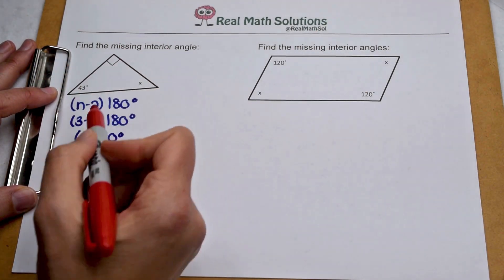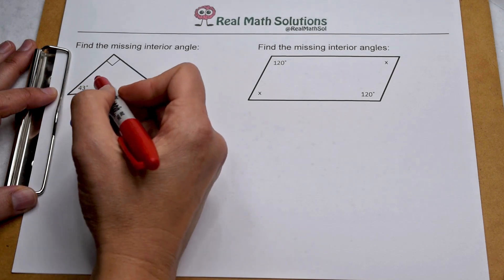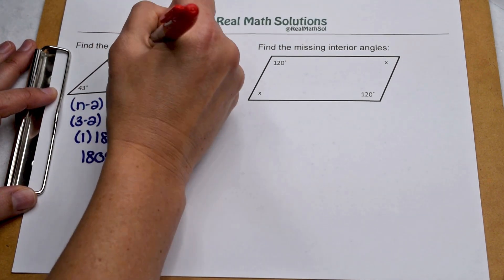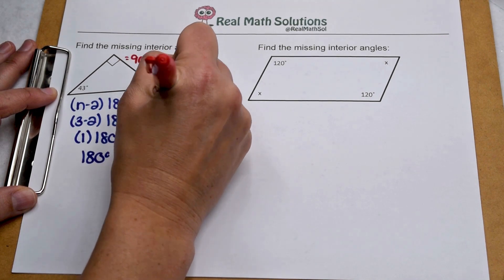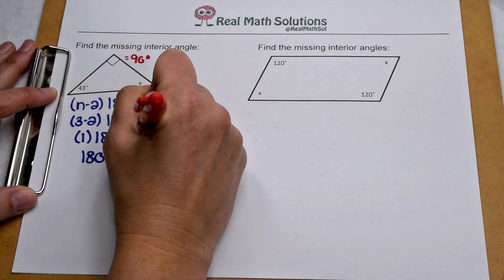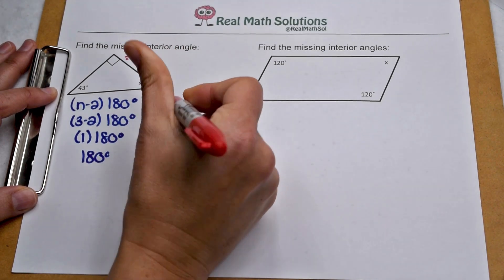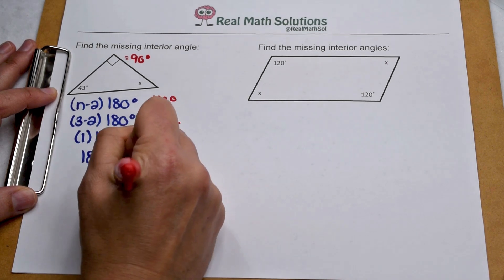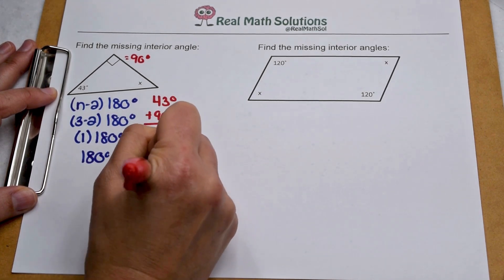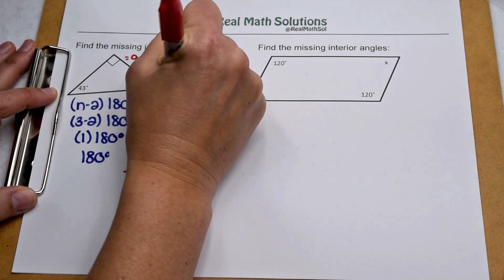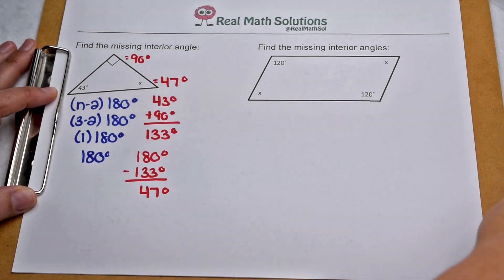Now we can use what we know, the 180 degrees, to find what's missing. One angle is worth 43 degrees. The box up here tells me this angle is worth 90. So we can add up 43 plus 90 to find how many degrees we've already used. 43 plus 90 gives me 133 degrees, and we should have 180 total. So to find our missing angle, we can do 180 minus the 133 degrees we've used to come out with 47 degrees left. That tells us our missing interior angle is worth 47 degrees.